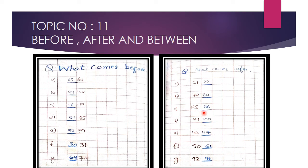After 85 is 86. After 99 is 100. After 46 is 47. After 50 is 51. After 98 is 99.